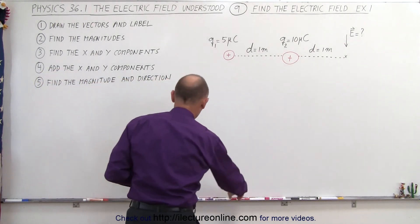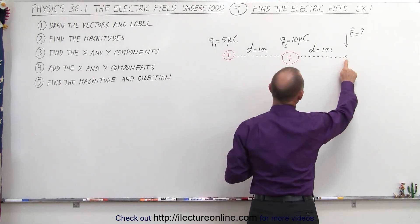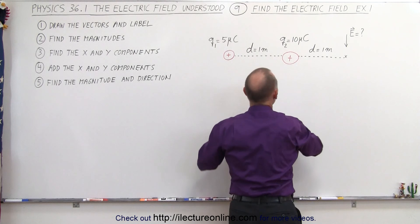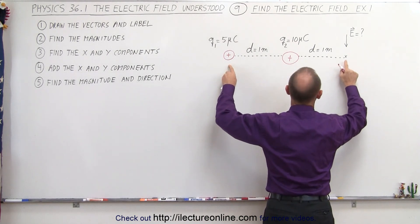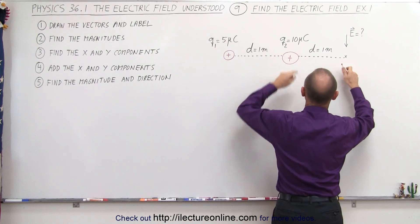So first we're going to draw the vectors, typically use a different color. So the electric field at this location due to this charge is going to be a lot weaker, not a stronger field, because this is a much closer charge and it's a much larger charge.